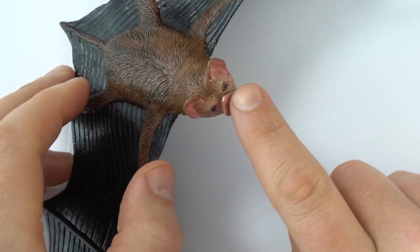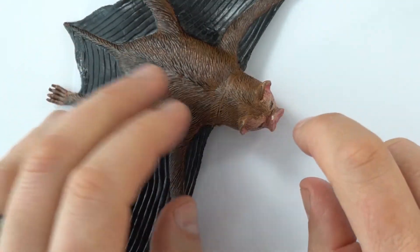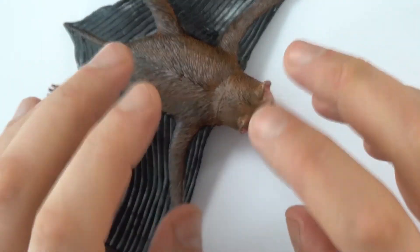So how does a bat know how to find its prey when they're quite small and they're moving quite fast and it can't see them because it's night time?